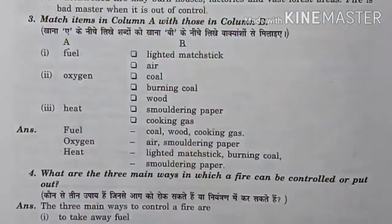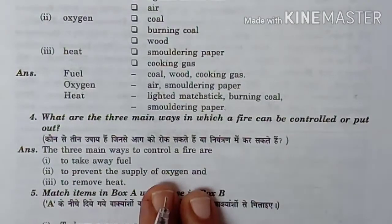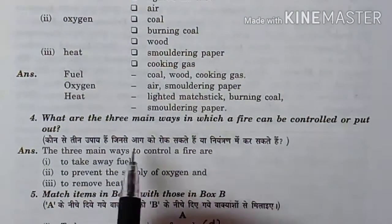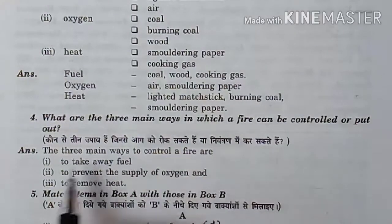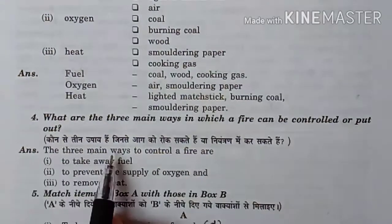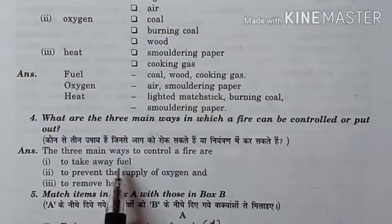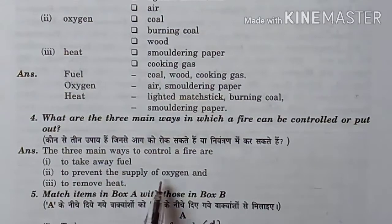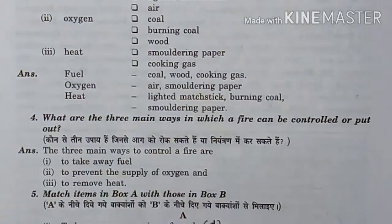Next question: what are the three main ways in which a fire can be controlled or put out? The three main ways to control a fire are: first, to take away fuel; second, to prevent the supply of oxygen; and third, to remove heat.